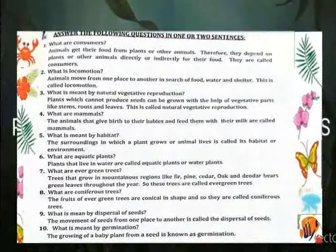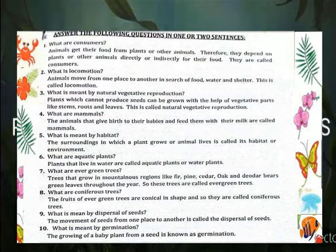What are consumers? Animals get their food from plants or other animals. Therefore, they depend on plants or other animals directly or indirectly for their food. They are called consumers.